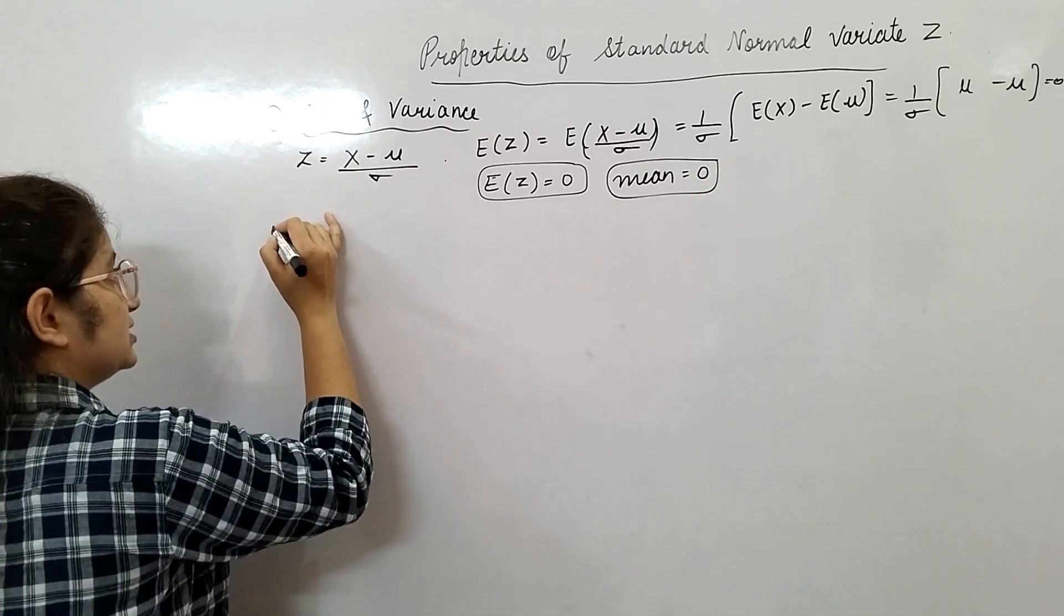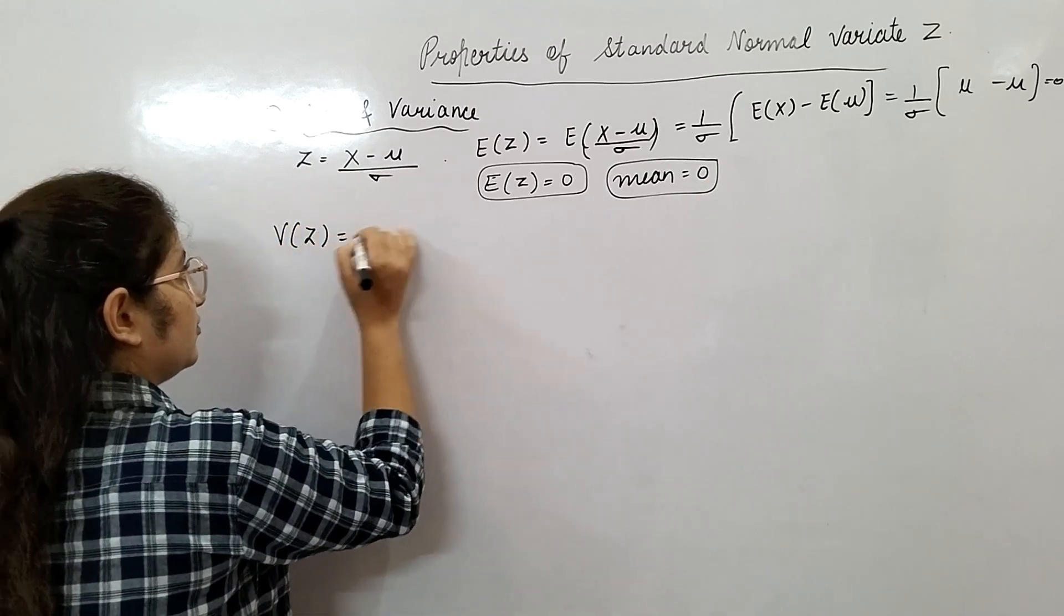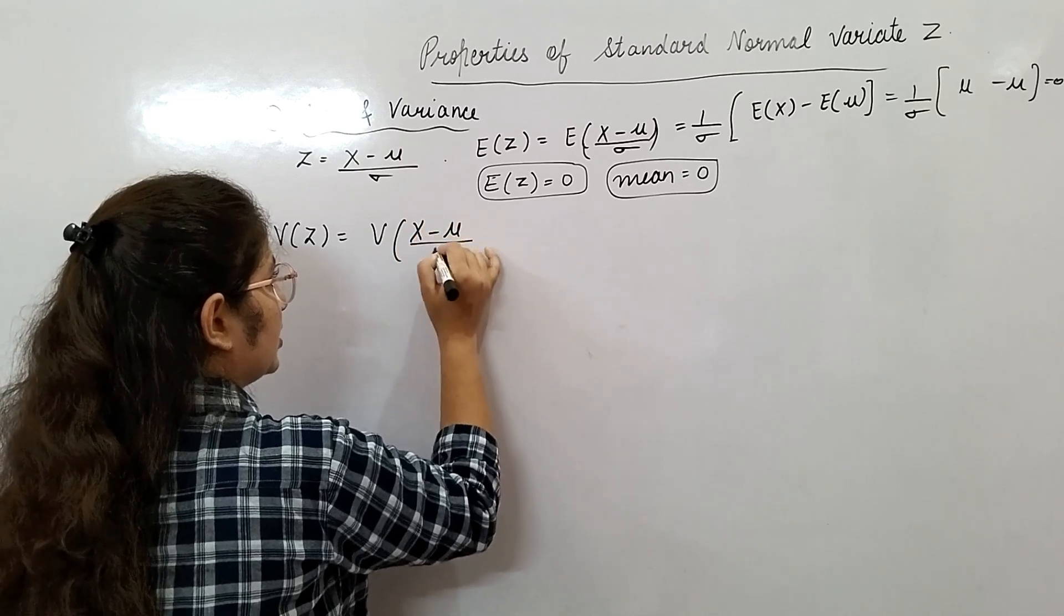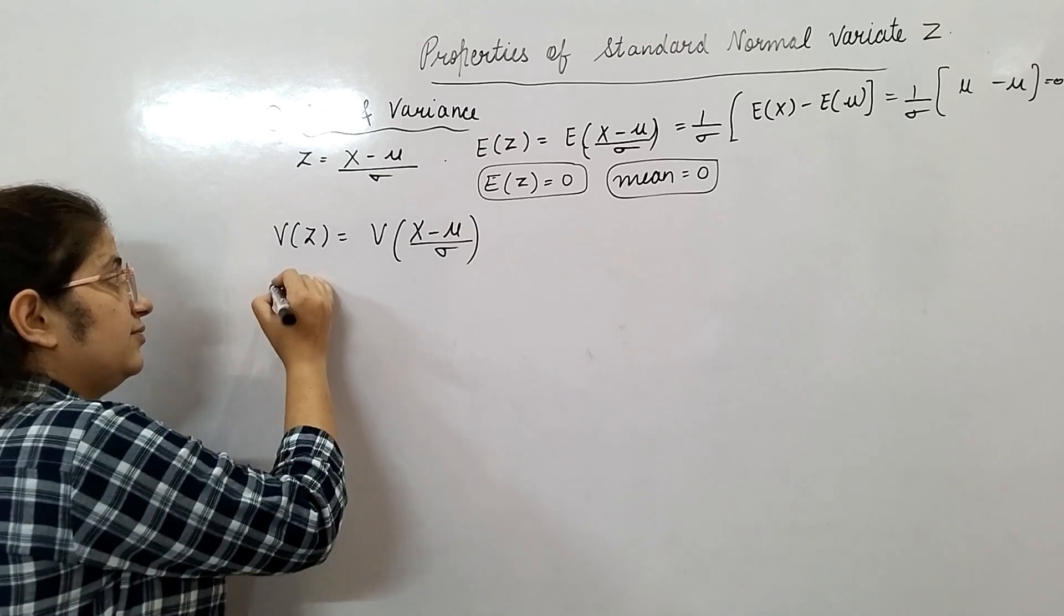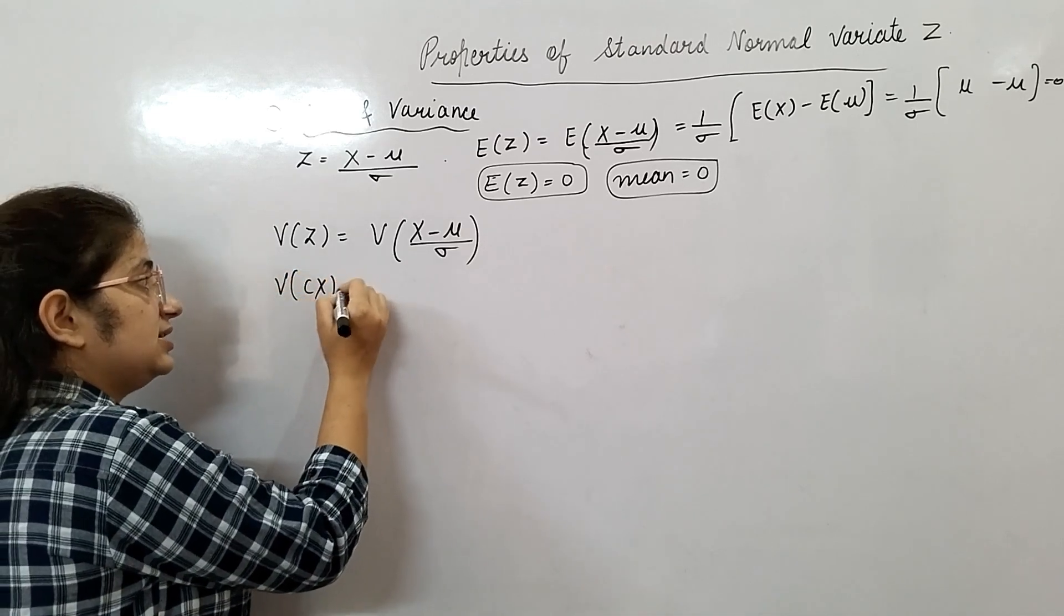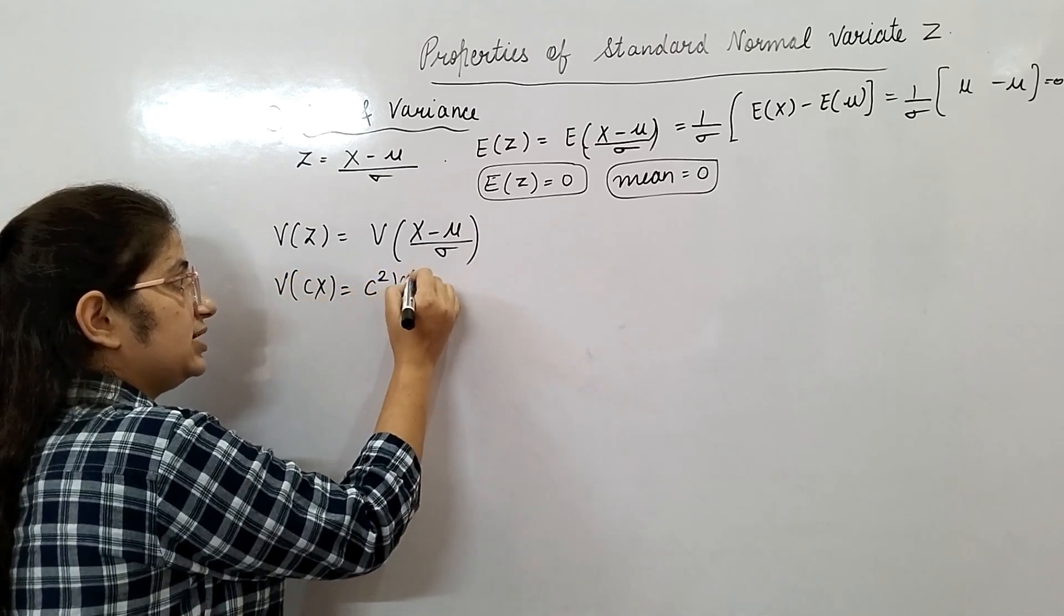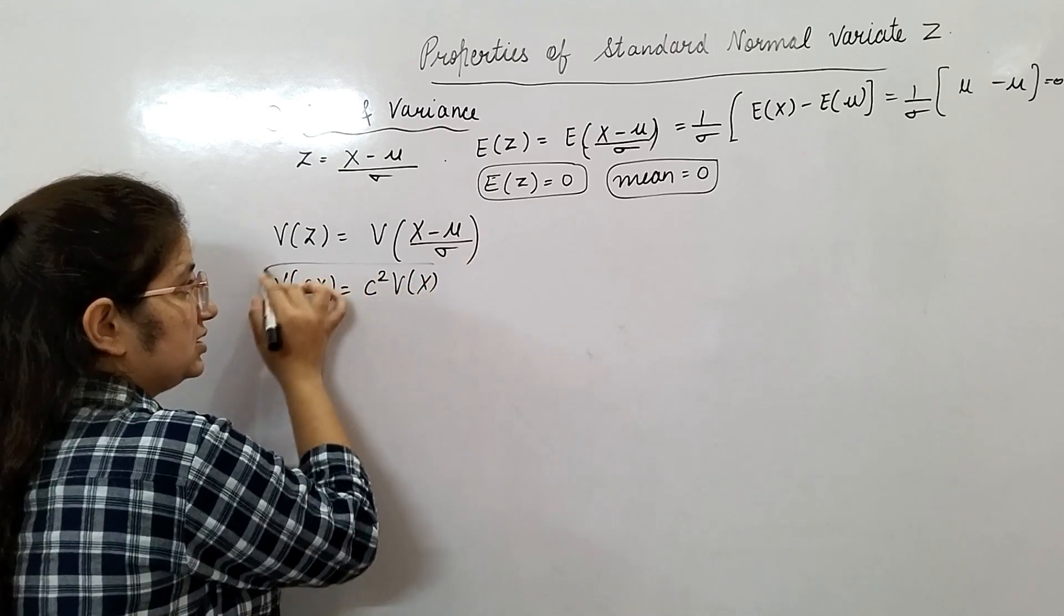Now variance. Variance of Z, variance of X minus mu by sigma. This constant, variance of CX will be C square variance of X. By using this result here.